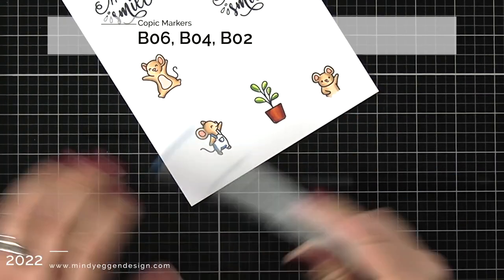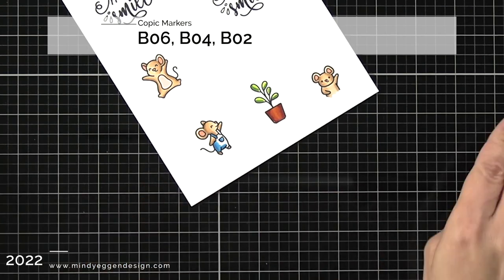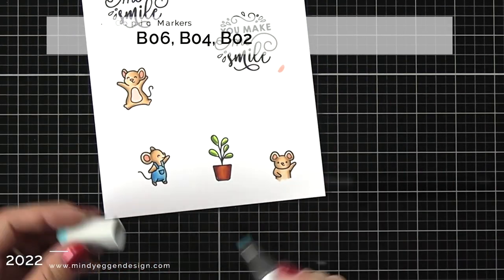For my bib overalls, which I thought was super cute to go with my little painter mouse, I have B06, B04, and B02.